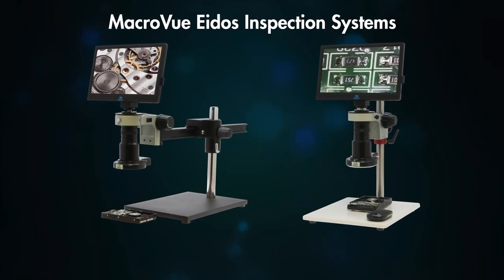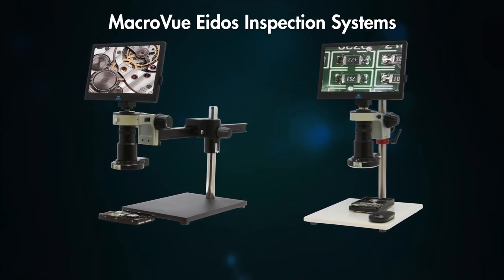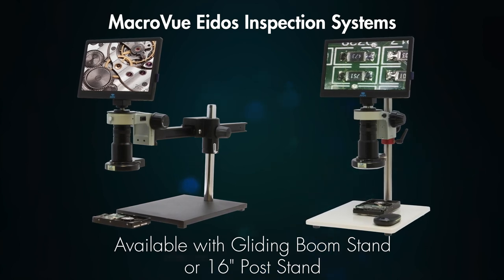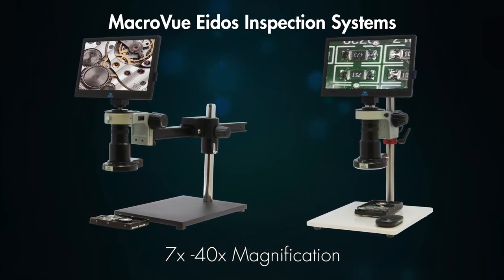The Eidos is also featured in our new MacroVue video inspection systems available with a gliding boom stand or a 16-inch post stand and offers a magnification range of 7x to 40x at a 6-inch working distance.